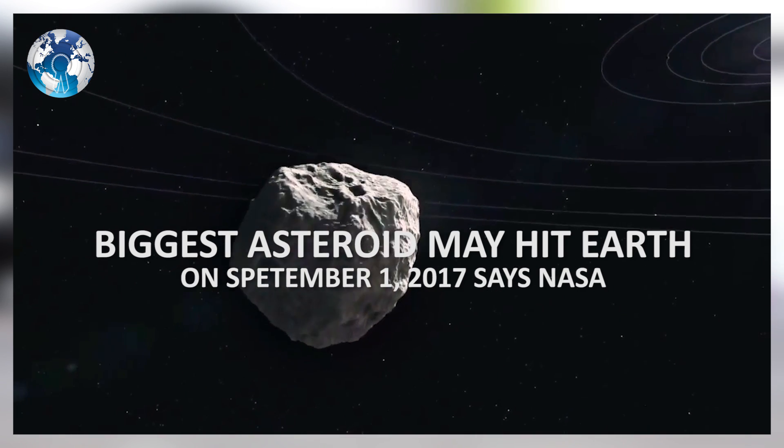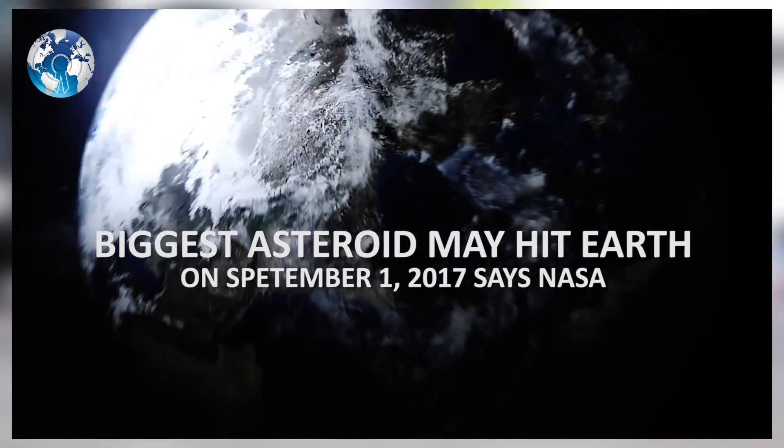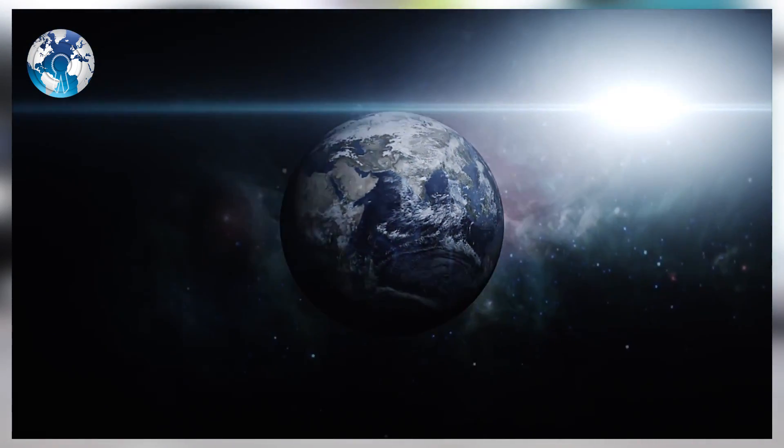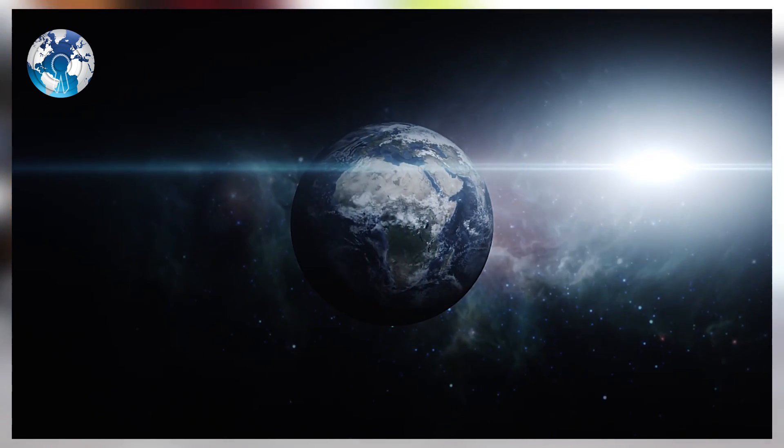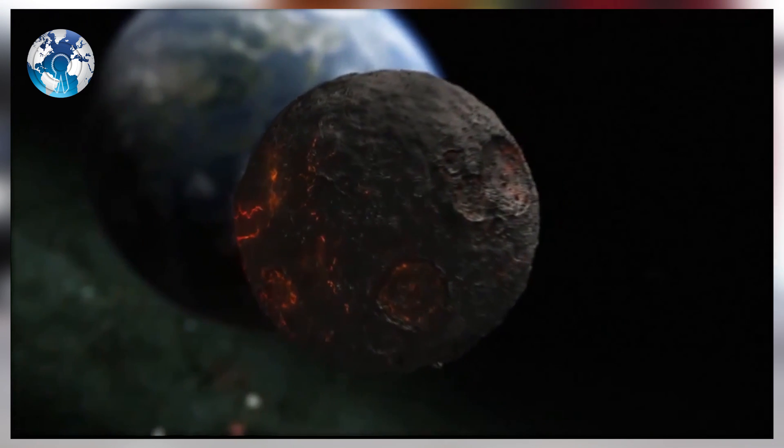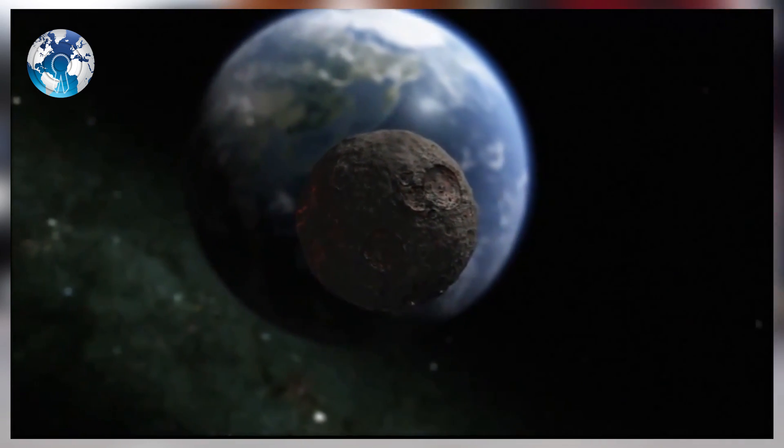A big asteroid to hit Earth on September 1. In Washington, a large near-Earth asteroid will pass safely by our planet on September 1 at a distance of about 7 million kilometers, NASA said.